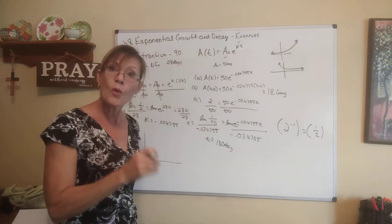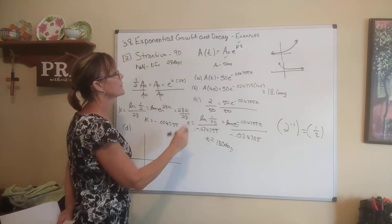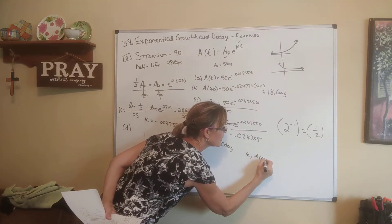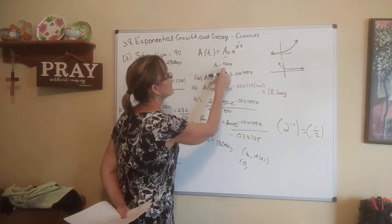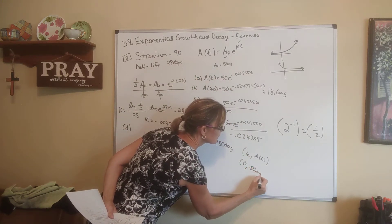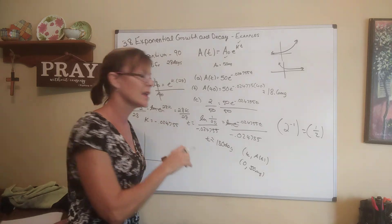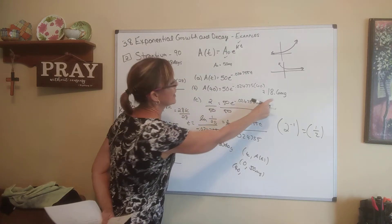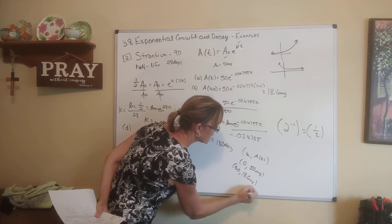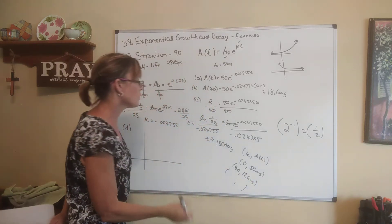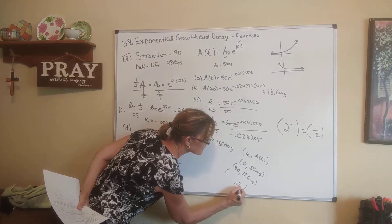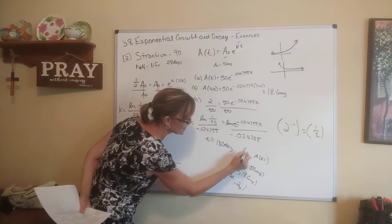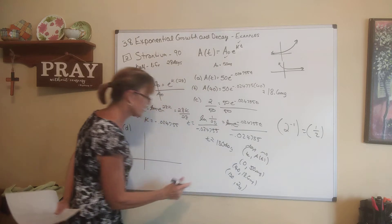We calculated some points. When time is 0, we have 50 milligrams — that's the initial amount and the biggest it's ever going to be because it's decaying. After 40 days we had 18.6 milligrams left. And in part c, we did it backwards — they said how long to get to 2 milligrams, and we found it took 130 days. T is in days and A(t) is in milligrams.